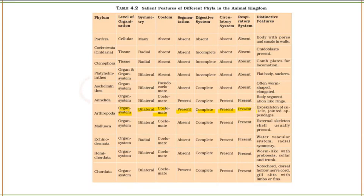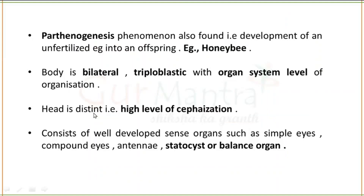The distinctive features of Arthropoda are the exoskeleton made up of cuticle and jointed appendages. The most distinctive feature is that the appendages — the legs — are jointed. In this group, there is also an important phenomenon which is Parthenogenesis.